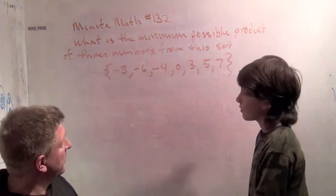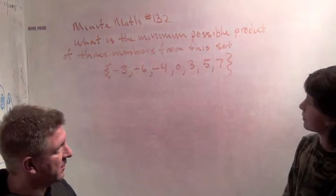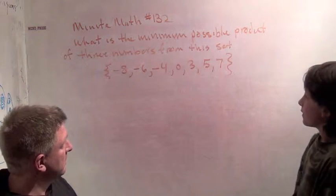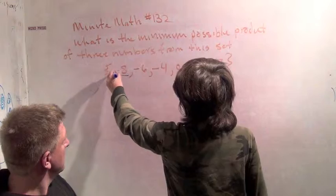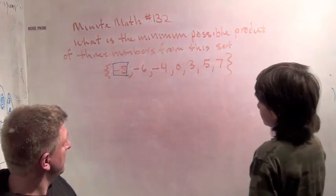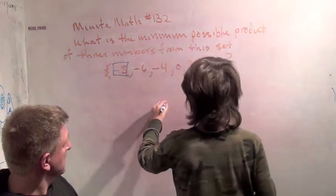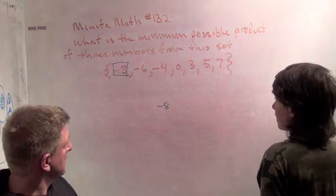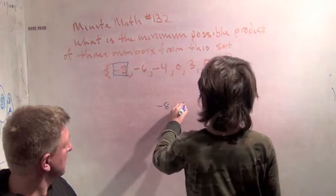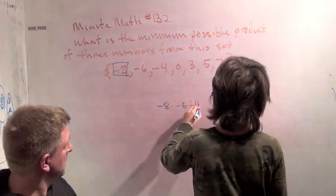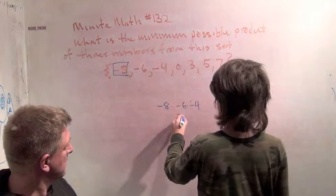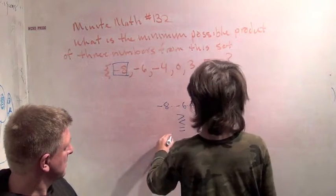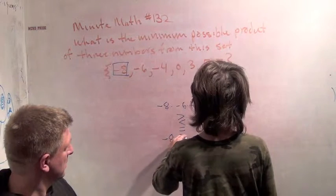You've got to pick three numbers from that set and find the smallest possible product. Well, it's going to be negative — the smallest possible number. And minus 8 is the smallest negative, so we should start with this one. It was minus 8 times minus 6 times minus 4.